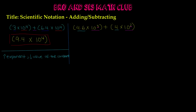So the first term stays the same: 4.6 times 10 to the 3rd. For the second term, we're increasing the exponent from 10 to the 2nd to 10 to the 3rd — we went up by 1 in our exponent. So in the constant, we decrease one place value: 4 becomes 0.4. Our new term is 0.4 times 10 to the 3rd.